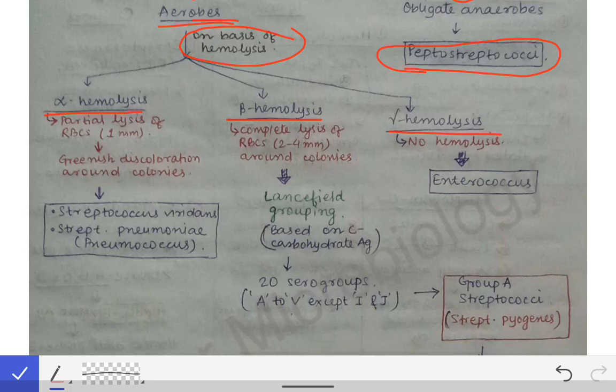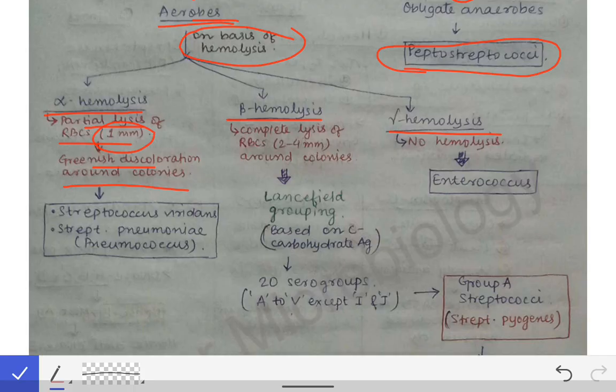Alpha hemolysis means there will be partial hemolysis of RBCs. There will be partial lysis of RBCs and the zone of lysis will be very small — about 1 mm surrounding the colonies. The most important feature to detect alpha hemolysis is greenish discoloration around the colonies. Whenever we see greenish discoloration around the colonies, that means it is alpha hemolysis.